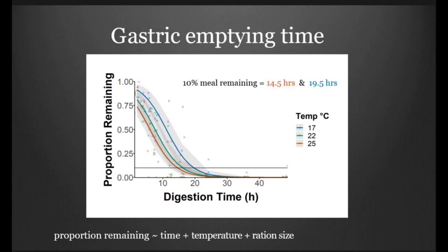Looking at it another way, physiologists will often come up with a gastric emptying time, and there is some variation within this to capture an empty stomach. We set ours to 10 percent of the meal remaining, and we found that 25 degrees Celsius fish would actually pass their meal within 14 and a half hours, as opposed to the 17 degrees Celsius fish, which would pass their meal in about 19 and a half hours. So roughly a five hour difference is occurring here.